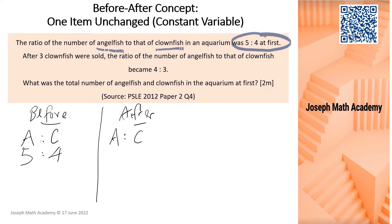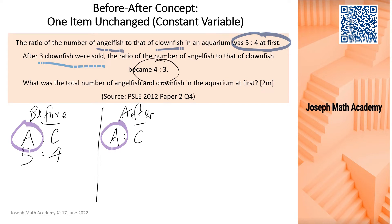Line 2 tells us that 3 clownfish were sold. When 3 clownfish were sold, there is a change in one particular item — the clownfish — while the other item, angelfish, stays the same. So this is a one-item-unchanged scenario. The constant variable is the angelfish, and we are going to make the angelfish constant using the common multiple concept.